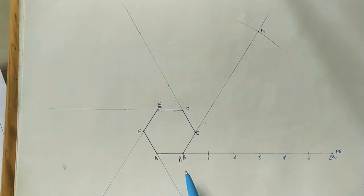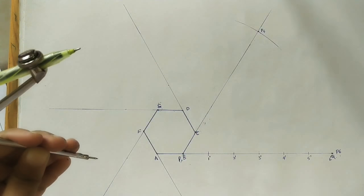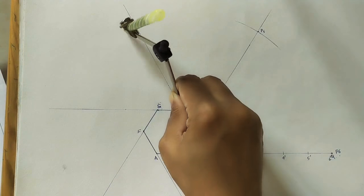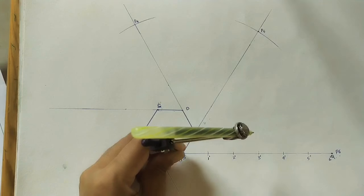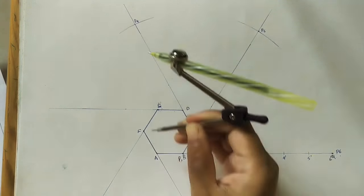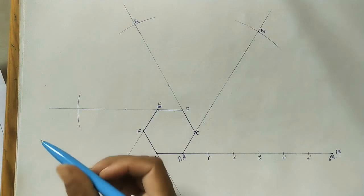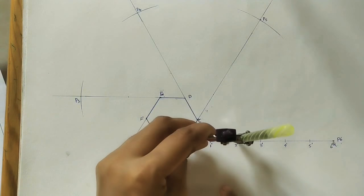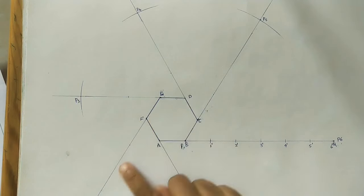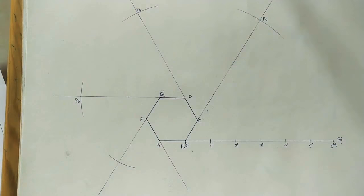Take length P4 with the compass and, using D as center, draw a larger arc on the extended CD side. Mark the intersection as P4. Next, take length P3, using E as center, and mark the intersection point as P3. Then take length P2 using the compass and, with F as center, draw a larger arc and mark the intersection as P2.